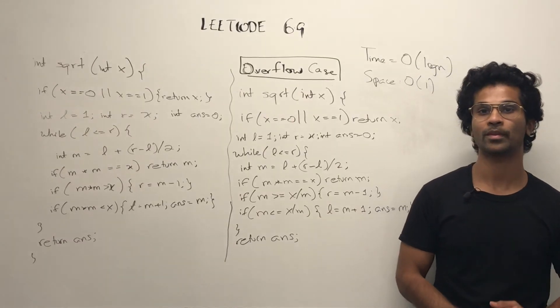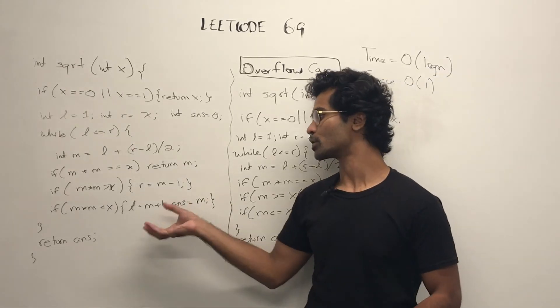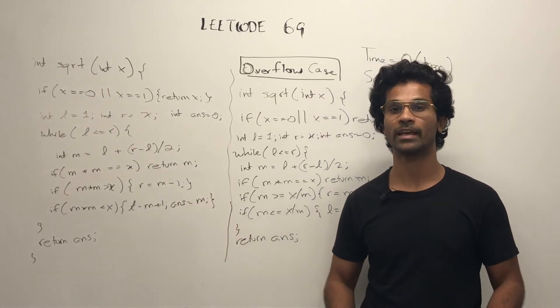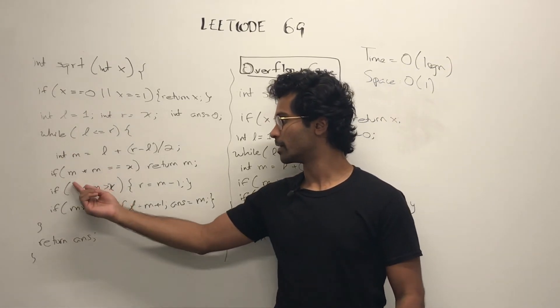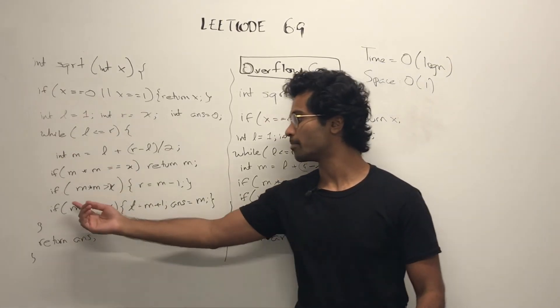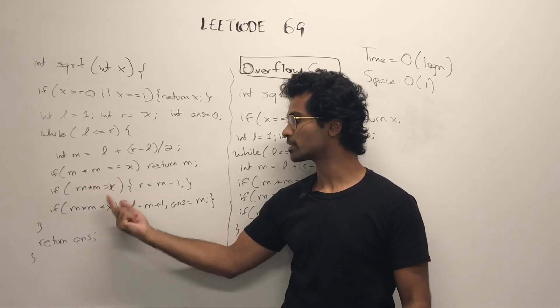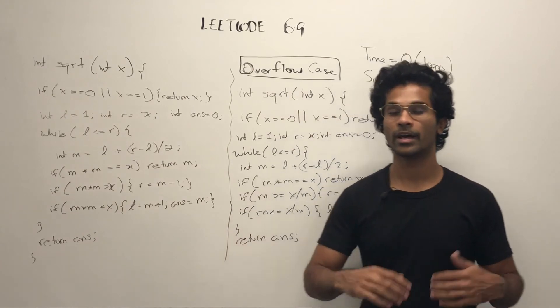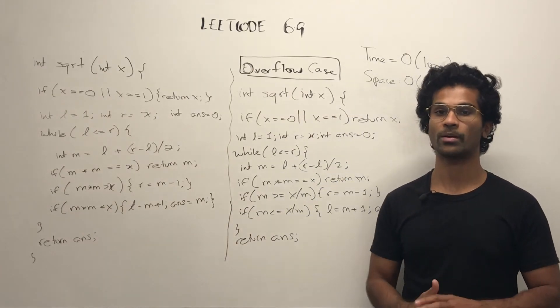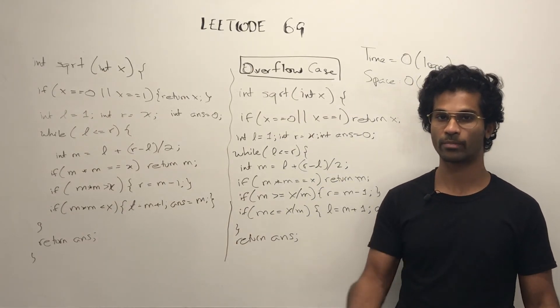The diagram I just drew actually pertains to the simple version of the code, where we don't have to take care of overflows. So in this version, we just have m times m to check the square root. Otherwise we do m times m to see if it's larger than x, or m times m if it's less than x. It's simple and we don't really have to worry about larger numbers going out of bounds.